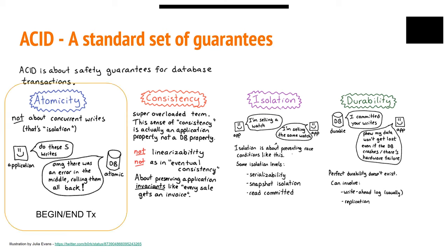The first property is atomicity. We want to be able to tell the database to make changes on multiple rows all at once — or none of them. If your application starts making changes and then you want to stop, you can undo them without having affected any rows. Or if the database crashes while applying changes, either all of the changes have been applied or none of them — you're never left in the middle.